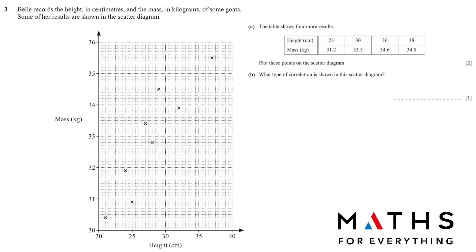Question number 3. Bellet records the height in centimeters and the mass in kilograms of some goats. So this is the height. This is the mass. Some of our results are shown in the scatter diagram. The table shows four more results, the height and the mass. Plot these points on the scatter diagram. So we have to first understand the grid that is given to us. Here for the height, every two lines make one point.